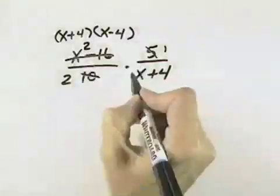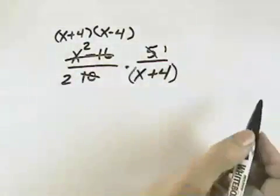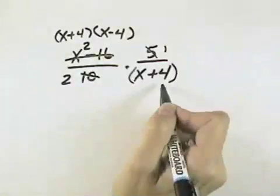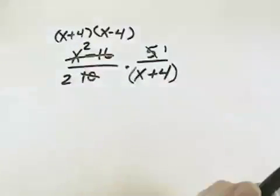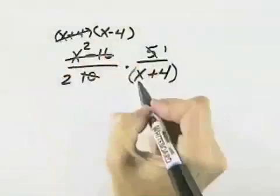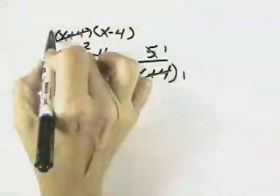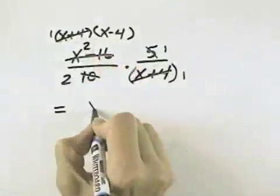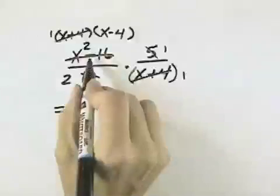The x plus 4, then, is a common factor because this is held all together as a factor. We can't cancel individual terms, but we can cancel the entire thing as a factor. So we have a common factor of x plus 4. If we cancel that out, then what we have left is x minus 4 in our first numerator.